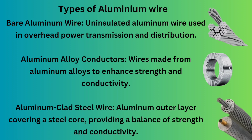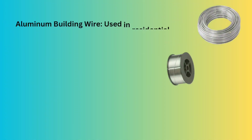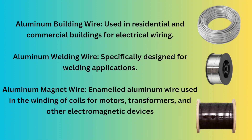Aluminum alloy conductors are wires made from aluminum alloys to enhance strength and conductivity. Aluminum clad steel wire has an aluminum outer layer covering a steel core, providing a balance of strength and conductivity. Aluminum building wire is used in residential and commercial buildings for electrical wiring. Aluminum welding wire is specifically designed for welding applications. Aluminum magnet wire is enameled aluminum wire used in the winding of coils for motors, transformers, and other electromagnetic devices.